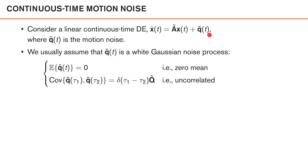A very popular and common assumption regarding q̃(t) is that it's a white Gaussian noise process, which means that it has zero mean and that it's uncorrelated over time. Uncorrelated over time means that if you take the cross covariance between q̃ at different time instances, so τ₁ ≠ τ₂, this cross covariance will be zero. However, if we take the covariance of q̃ at the same time, so τ₁ = τ₂, we get something infinite, because the cross covariance is assumed to be an impulse function in time.